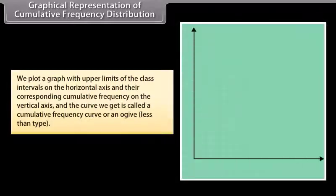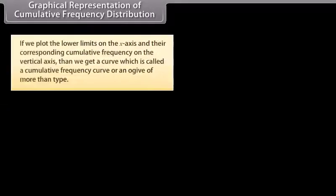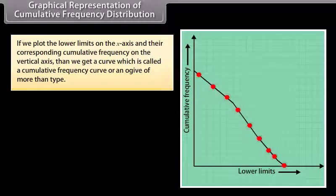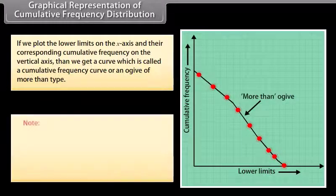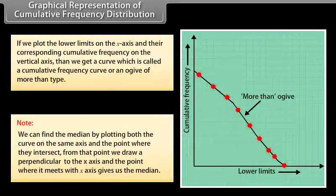Graphical representation of cumulative frequency distribution: We plot a graph with upper limits of class intervals on the horizontal axis and their cumulative frequency on the vertical axis. The curve obtained is called a cumulative frequency curve or ogive of less than type. If we plot the lower limits on the x-axis with their cumulative frequency on the vertical axis, we get an ogive of more than type. We can find the median by plotting both curves on the same axis; where they intersect, draw a perpendicular to the x-axis — that point gives the median.